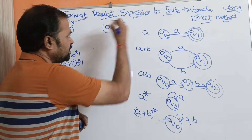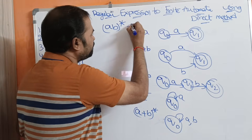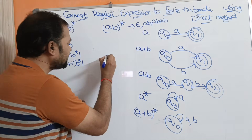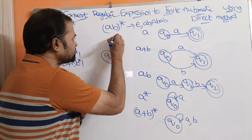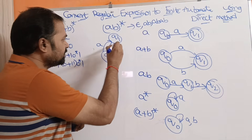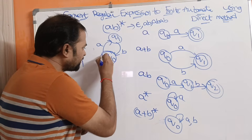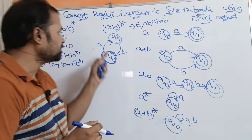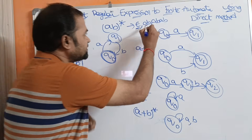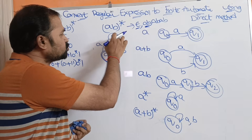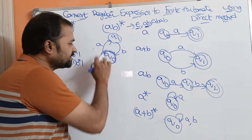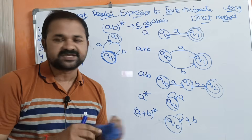Let the regular expression be (AB) whole star. Zero occurrences gives epsilon; one AB gives AB; two gives ABAB, and so on. Let the current state be Q0 and the next state be Q1. Q0 on A goes to Q1, and Q1 on B goes back to Q0. Q0 is the final state. For epsilon we stay at Q0; for AB we go Q0→Q1→Q0; for ABAB we repeat the cycle. This is the finite automata for (AB)*.